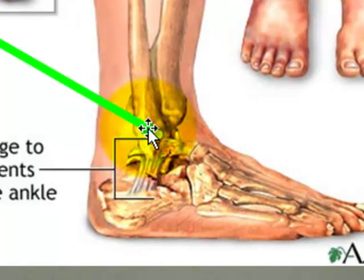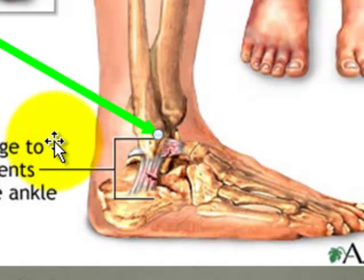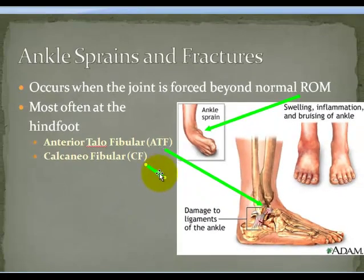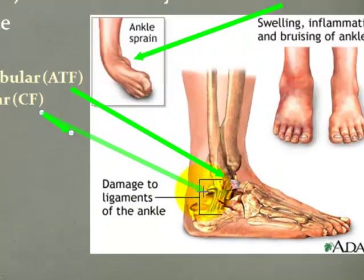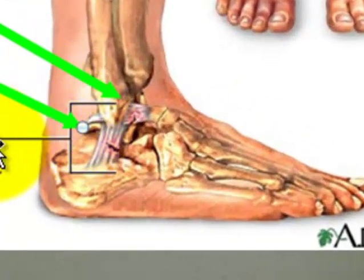Who can tell me what structure this is? Anthony — that's right, the anterior talofibular ligament. Well done. The other structure is another structure we discussed in our anatomy lecture. Diane, what's the answer? You got it — the calcaneofibular ligament. Excellent.